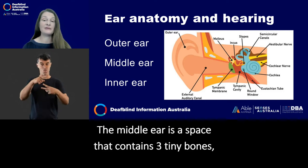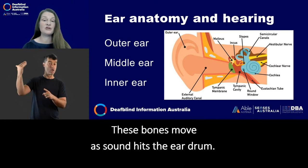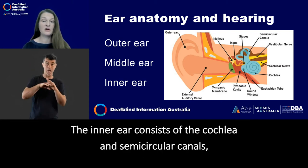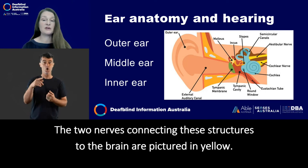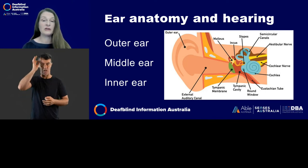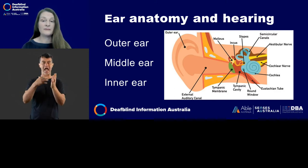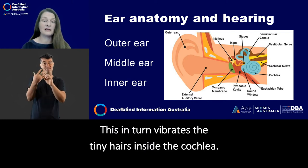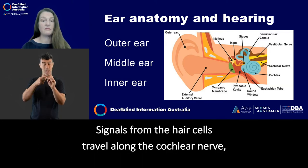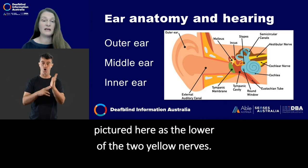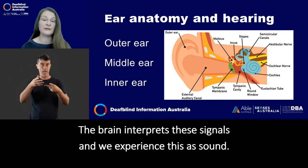The middle ear is a space that contains three tiny bones: the malleus, incus and stapes. These bones move as sound hits the eardrum. The inner ear consists of the cochlea and semicircular canals, pictured here in blue. The two nerves connecting these structures to the brain are pictured in yellow. The stapes bone joins to the cochlea and vibrates the fluid inside the cochlea. This in turn vibrates the tiny hairs inside the cochlea. The movement of the hairs creates a type of electrical signal. Signals from the hair cells travel along the cochlear nerve, pictured here as the lower of the two yellow nerves. The brain interprets these signals and we experience this as sound.